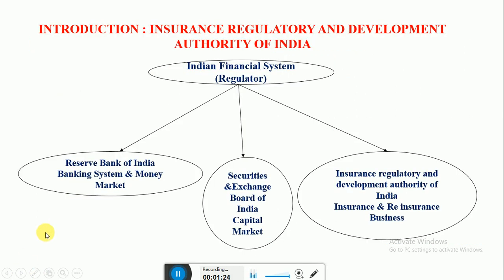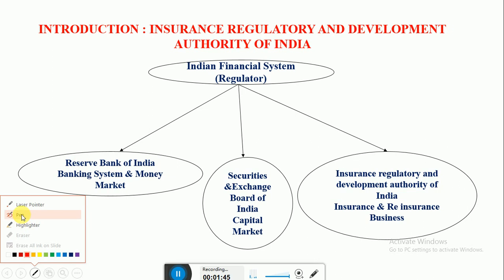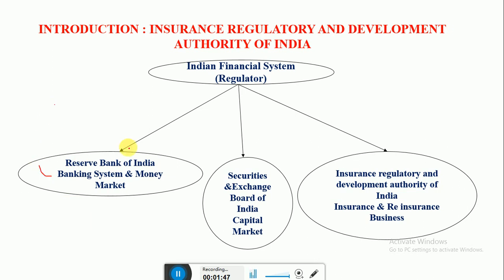IRDAI is basically a regulator — a statutory autonomous body which oversees the functioning of different sectors. For the entire financial system, we have three regulators. The first is the Reserve Bank of India, RBI, which looks after the money market and the entire commercial banking system.